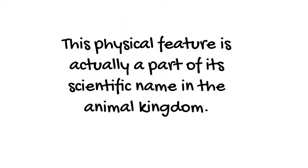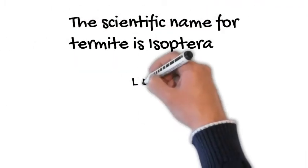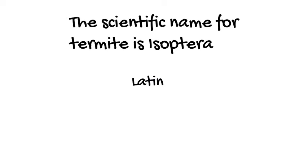This physical feature is actually part of the scientific name in the animal kingdom. The scientific name for termite is isoptera, which is derived from latin. Iso meaning equal, ptera meaning wing. Equal wing.